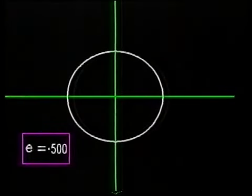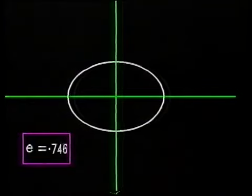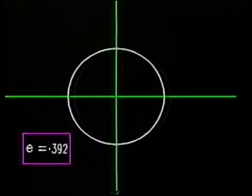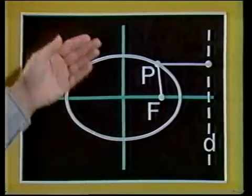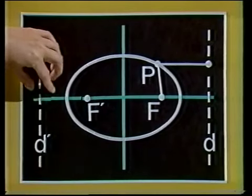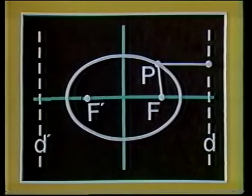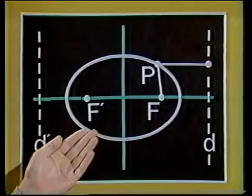Now let's see what happens as we continuously change the eccentricity. As e increases the ellipse gets flatter, and as we decrease e the ellipse becomes more circular. That shows how eccentricity changes the shape. But there's another thing we can see from this ellipse: because the ellipse is symmetric, this point F-dashed and line D-dashed form another focus-directrix pair which also generates the ellipse. So the ellipse has two foci and two directrices.